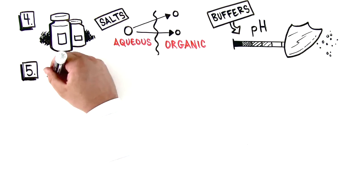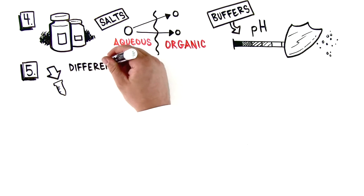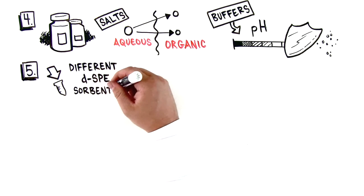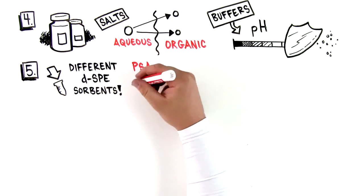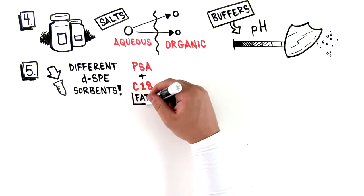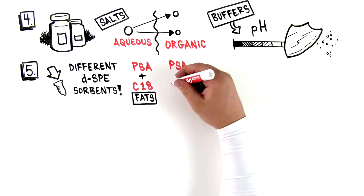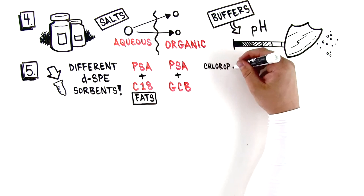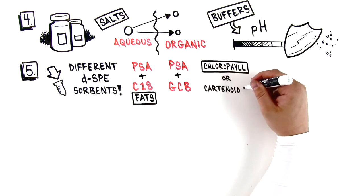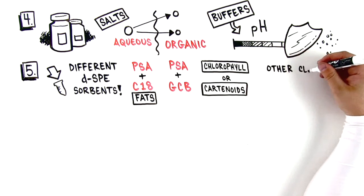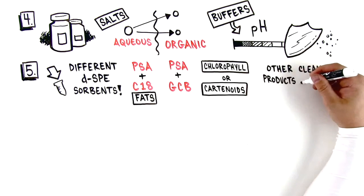Number five, different versions of QuEChERS use different dispersive SPE sorbents also. Typically, PSA is mixed with C18 for fatty samples, and PSA is mixed with graphitized carbon black, GCB, for foods with high levels of chlorophyll or carotenoids. Other combinations of cleanup products are available for a wide variety of applications.